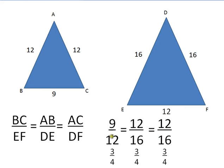So when I look at the ratios of each of the corresponding sides—the bottom, nine to 12, the left side, 12 to 16, and the right side, 12 to 16—I see that the ratios are all three-fourths, so I know these are two similar figures.